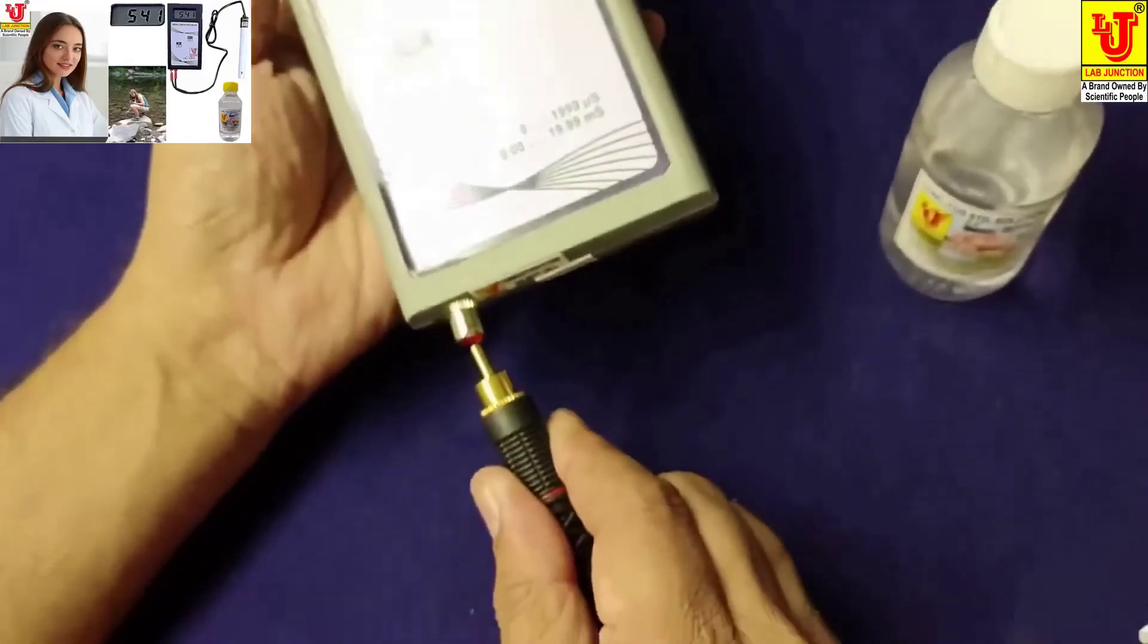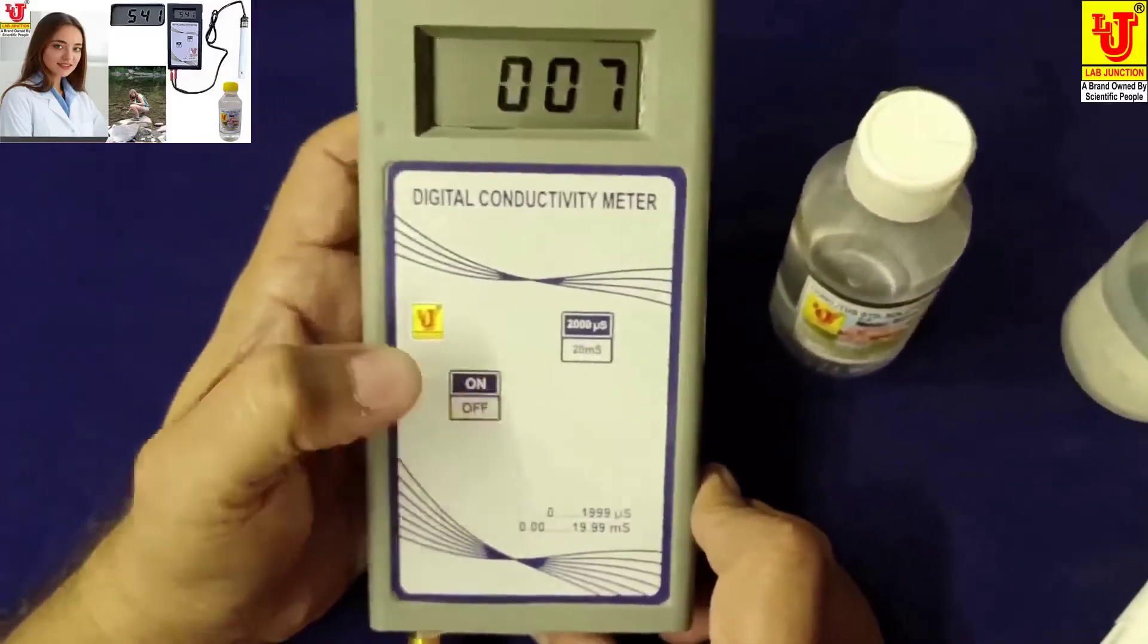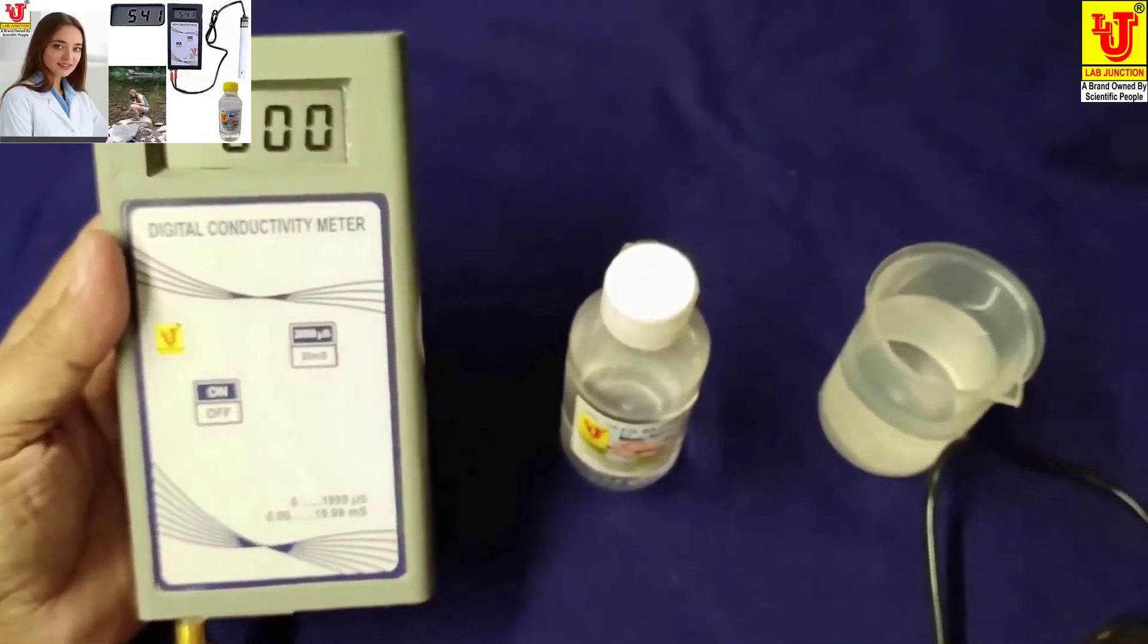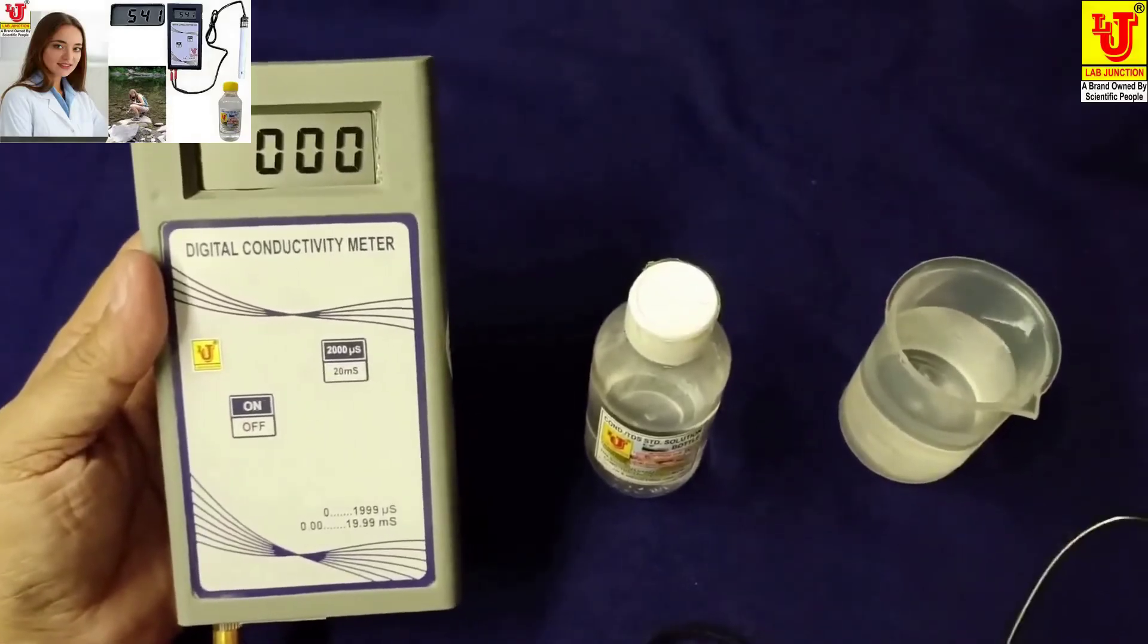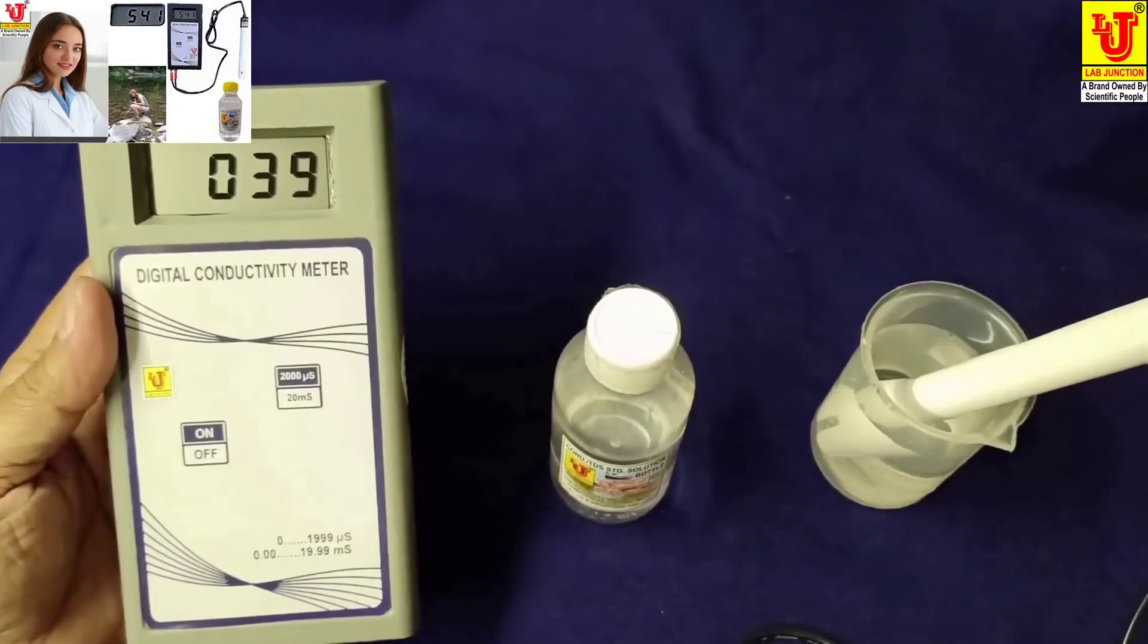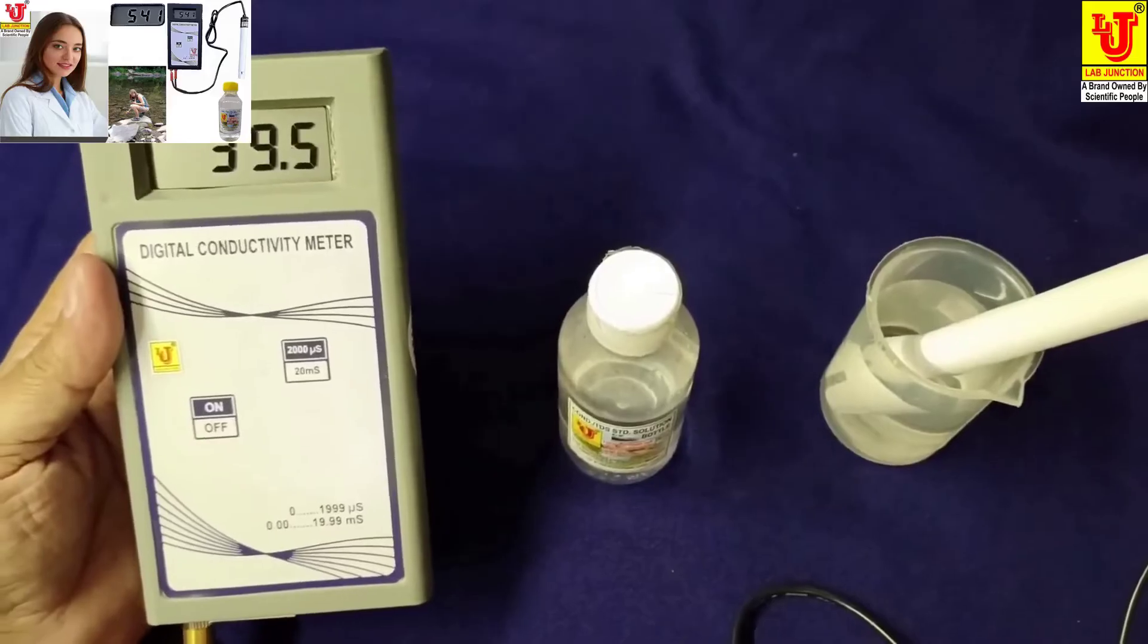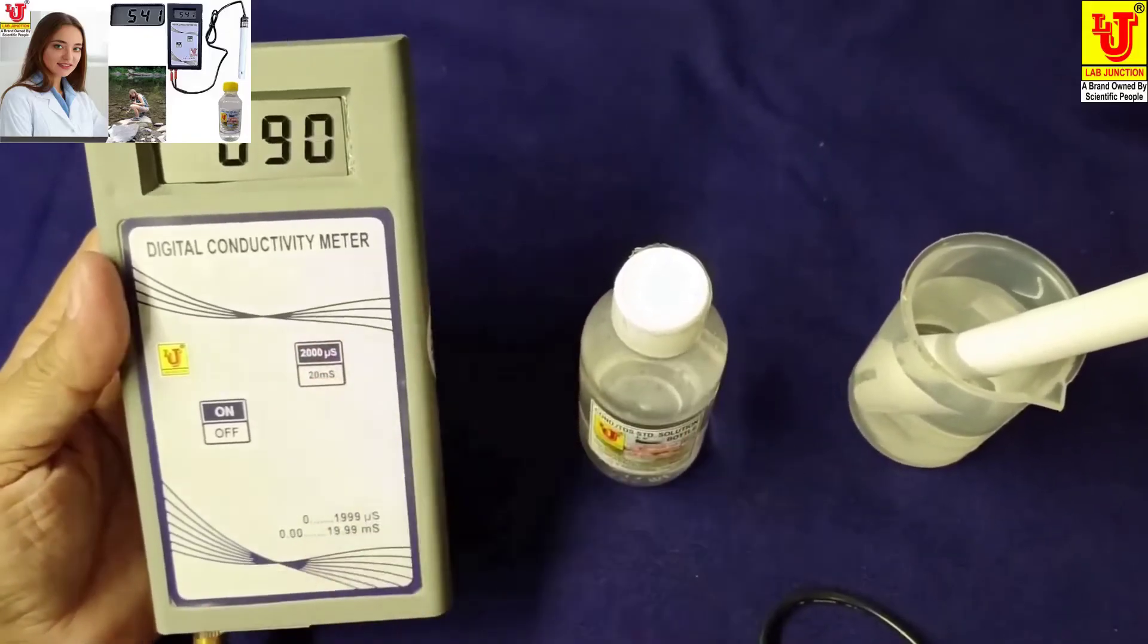Now first I am connecting conductivity cell with the instrument and switch on the instrument. Now suppose I am analyzing the test result from this instrument. Then directly switch on the instrument and dip your cell in the sample. This is 39 microsiemens and this is 0.039 millisiemens. This reading is in microsiemens and this reading is in millisiemens.